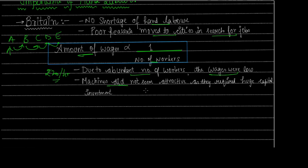Machines were avoided because with such an abundance of cheap hand labor, machines did not seem attractive to industrialists — they required huge capital investment to purchase and maintain. So industrialists preferred hand labor: it was cheap, abundantly available, and required no huge capital investment. This was the importance of hand labor in Britain.